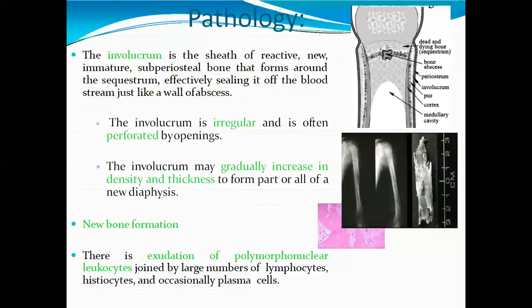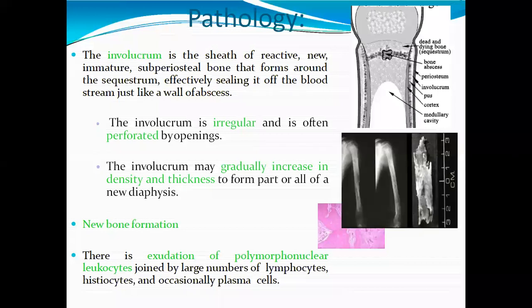The involucrum gradually increases in density and thickness to form part of the new diaphysis. This new bone formation forms the outer layer of the new diaphysis — essentially new bone formation around the area of infection.